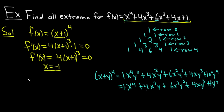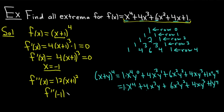Now let's check by taking the derivative again. f double prime of x: 3 times 4 is 12, so f double prime of x equals 12(x plus 1) squared. If we plug in negative 1, something unfortunate happens: we get 12 times (negative 1 plus 1) squared, which is 12 times 0, equaling 0. That is not good — the second derivative test fails at this point.